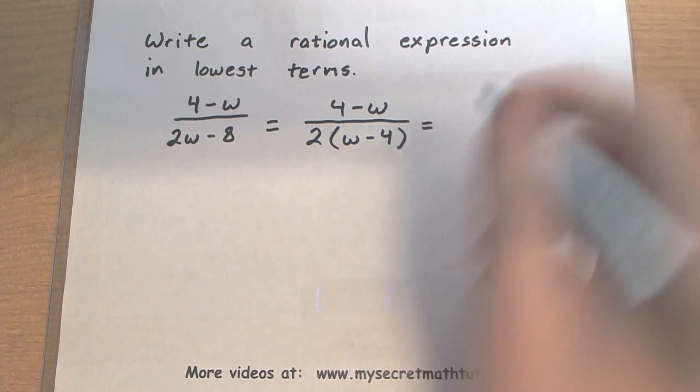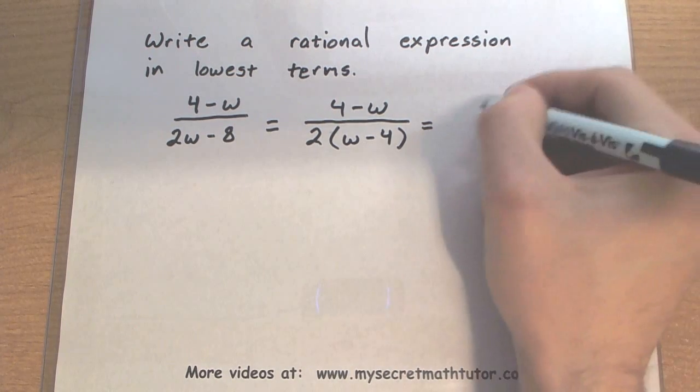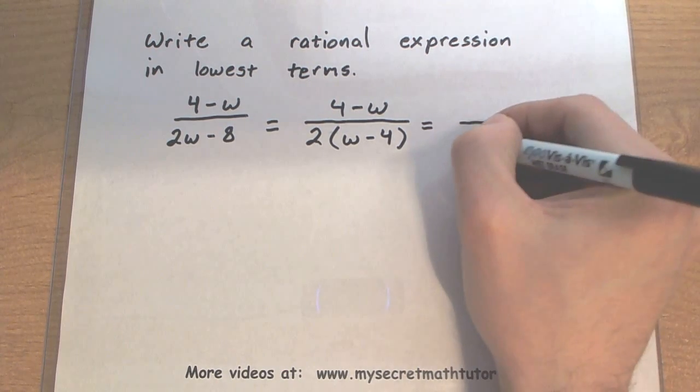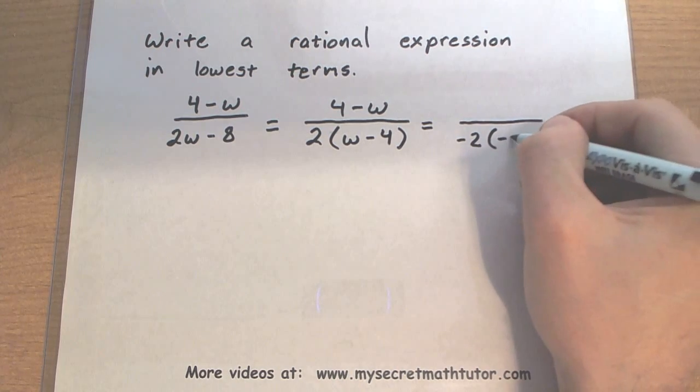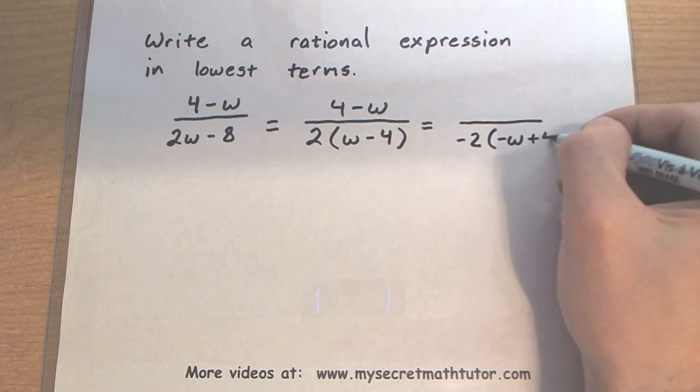So in addition to factoring out that 2, let's also take out a negative. That would make my 2 negative. Give us a negative w plus 4.